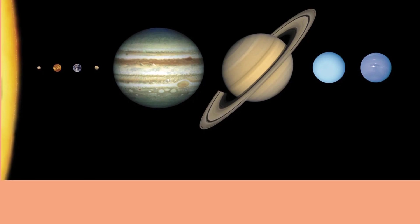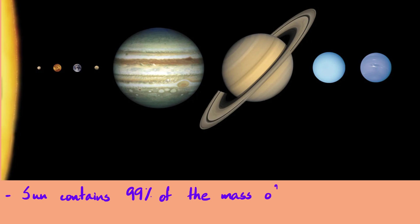The solar system has the sun at the center. What all planets have in common is that they all orbit the sun. The reason is that the sun contains 99% of the mass of the solar system. Even with all the planets, asteroids, and dwarf planets combined, the sun is so much larger that its gravity is strong enough to pull everything in its gravitational field toward itself.